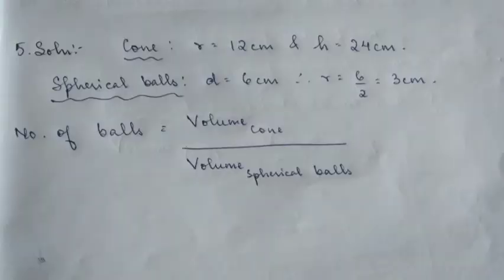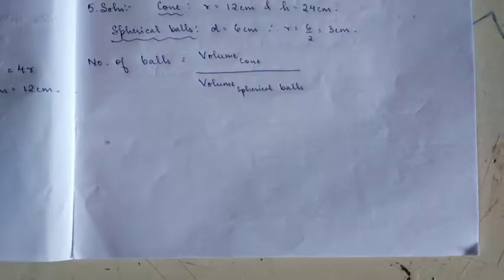Volume of hemispherical bowl is the volume of hemisphere. Volume of cylindrical bottles is the volume of cylinder. Now we substitute the formula and do the calculation. We can substitute our values - radius is 15, so it's 15 cubed. R squared is 5 by 2 into 5 by 2, and height we substitute.